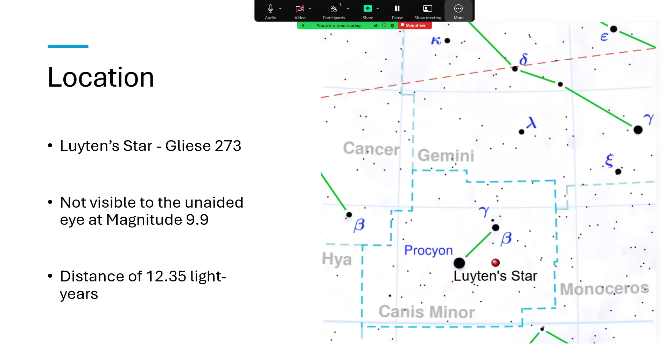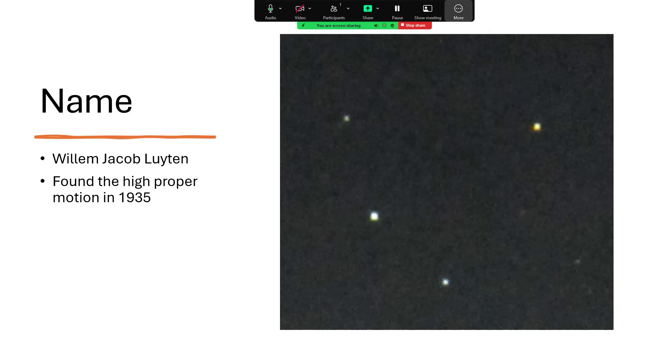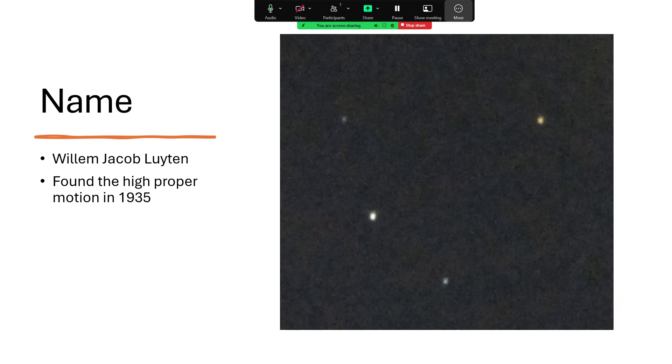Now, the Gliese catalogue, that's a catalogue of red dwarf stars, and so it's obvious that that's what this is going to be, and a distance fairly near the sun, just 12.35 light-years away. It was named after the discoverer, William Jacob Luyten, and he spotted it moving across the background of stars, the so-called proper motion, always a clue to the fact that the star must be fairly nearby, back in 1935.